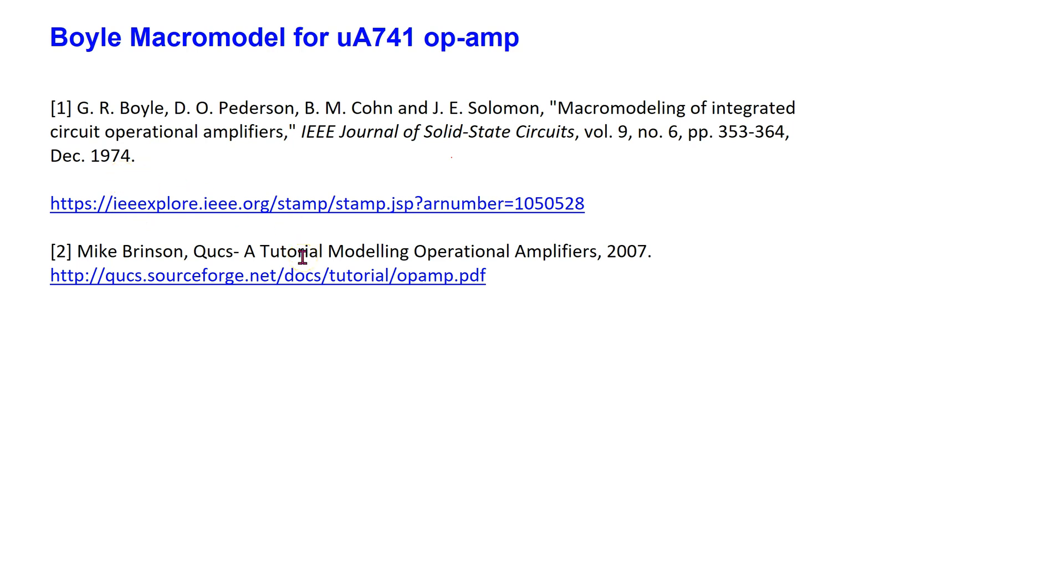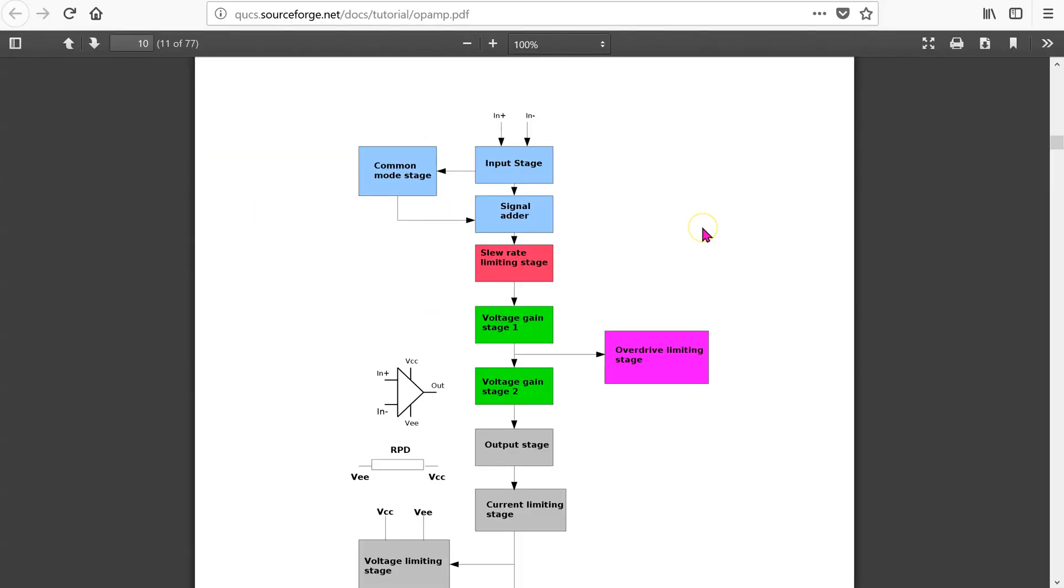If you are interested, a comprehensive tutorial explaining op-amp macro modeling is available here. Let us look at this tutorial. This is page 10 in the op-amp macro modeling tutorial. This figure shows the generic block diagram of an op-amp macro model. Each stage is appropriately modeled using circuit components and the macro model parameters are obtained from the datasheet. If you are interested to learn more, please check out this excellent and detailed tutorial.